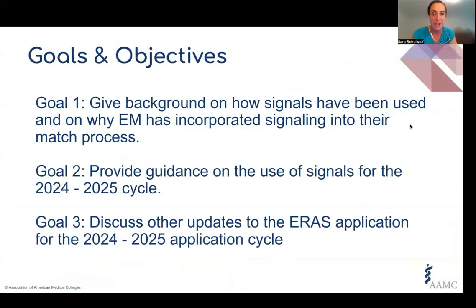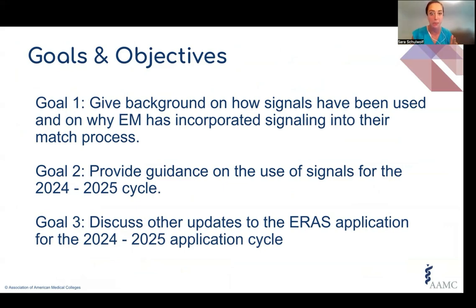We're going to briefly summarize the goals and objectives for this webinar. The primary goal is to gain some background on what signals are, where they came from, and how they've been used, not only in this application cycle but also what has changed from application cycles past. Goal number two, which will be the bulk of the discussion, will be to provide guidance on the use of signaling for this upcoming cycle. At the end, we'll touch on some other updates to the ARIS application for the 2024-2025 cycle. Questions can be sent in the chat and we'll save them for Q&A at the end.